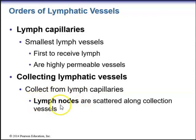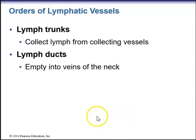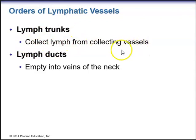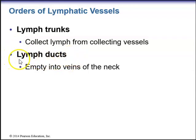We have lymph nodes, which are structures scattered along the collecting vessels. From these vessels, they then form lymph trunks. Lymph trunks collect lymph from the collecting vessels, and the lymph trunks will then form lymph ducts. These lymph ducts will empty into the veins of the neck.